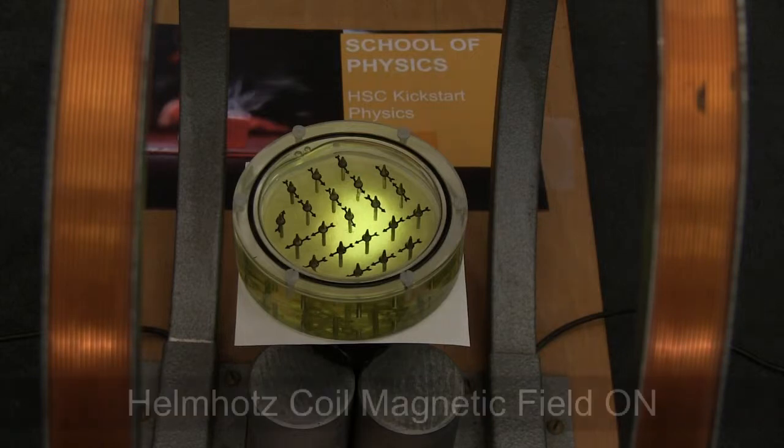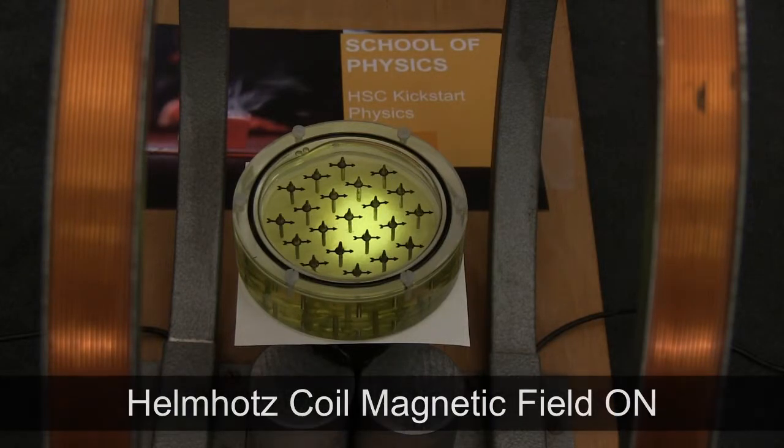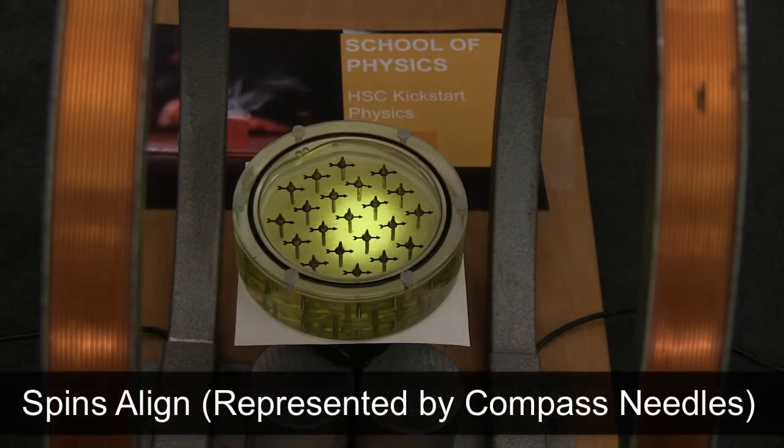Once we turn on the magnetic field for the Helmholtz coil, you can see that the spins inside the body will all align with that field.